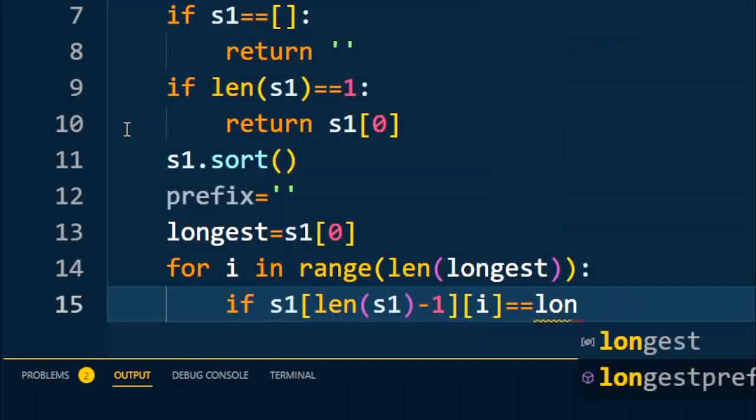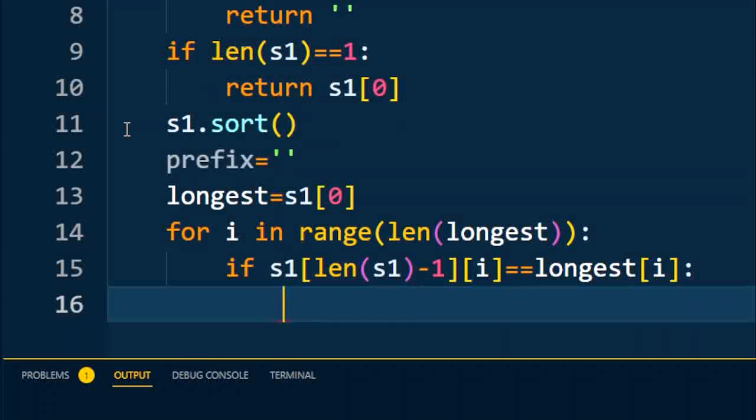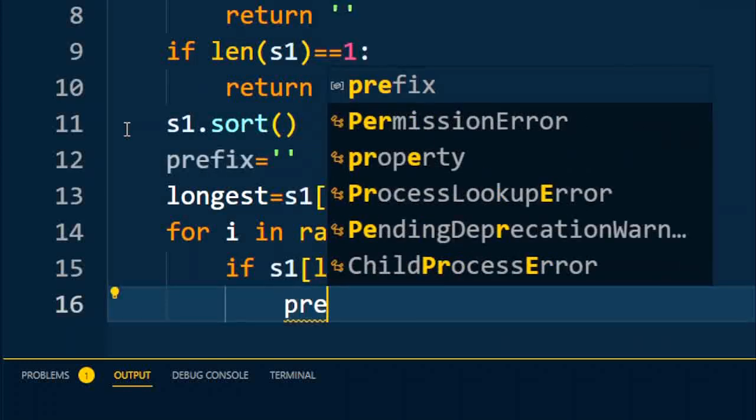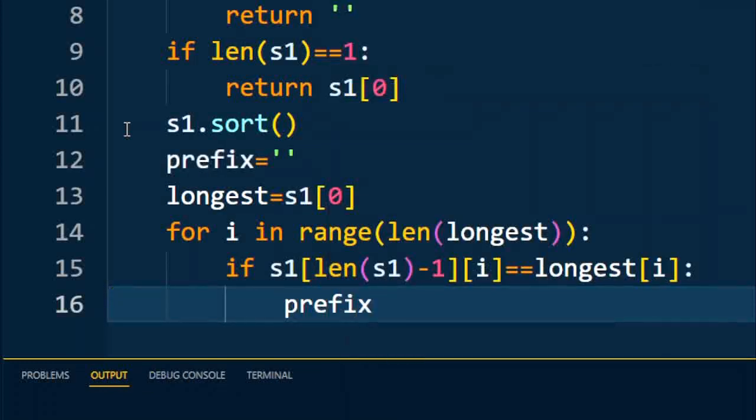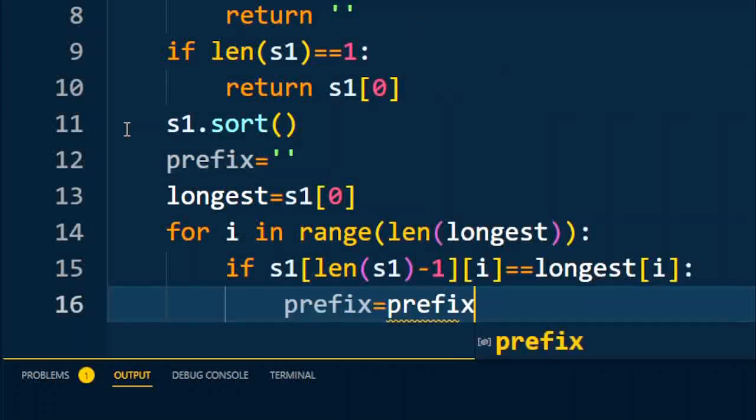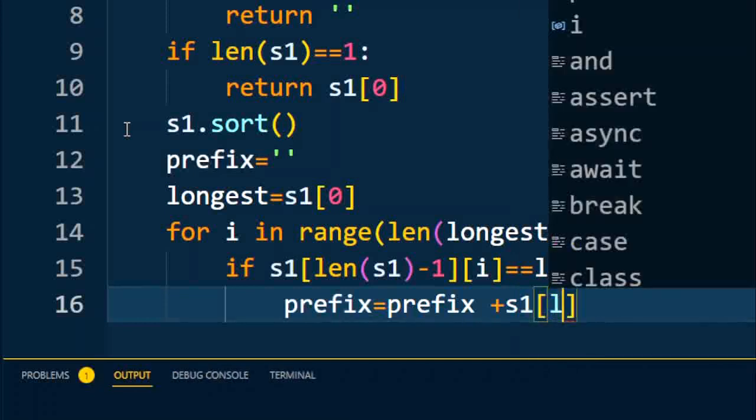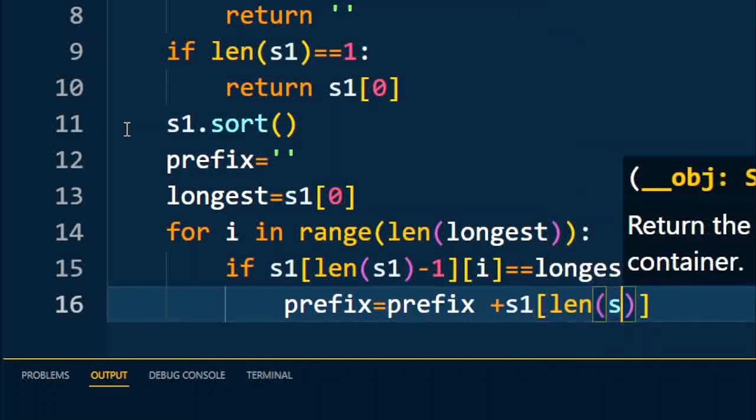If this condition is true, then we are going to obtain the prefix. So prefix equals prefix plus that character, s1[len(s1)-1][i]. So that character we are going to add into the prefix. This process repeats again and again.